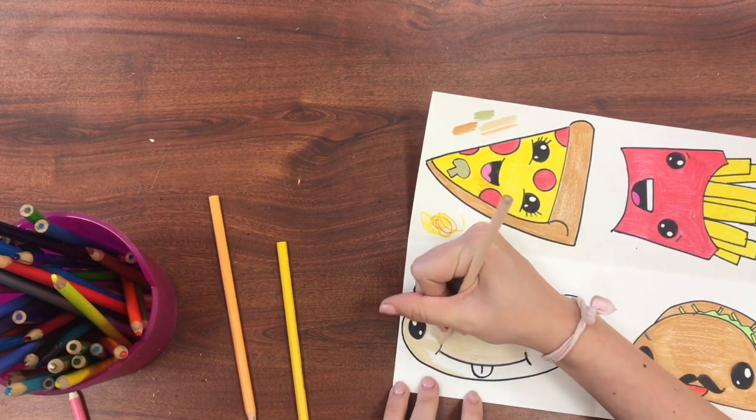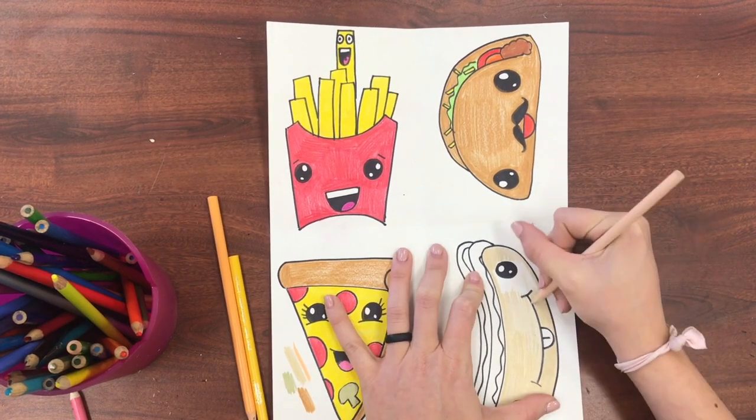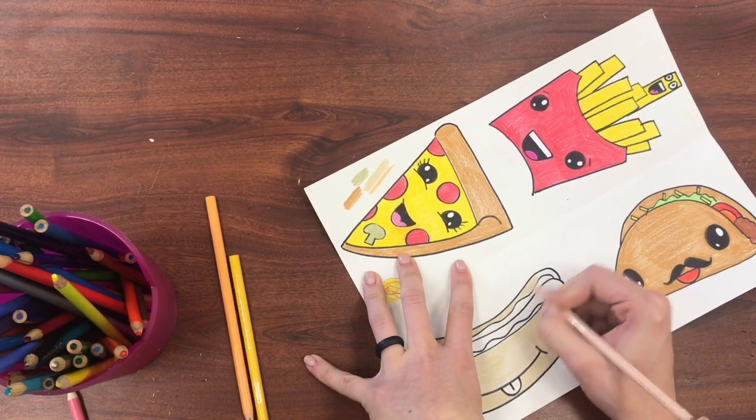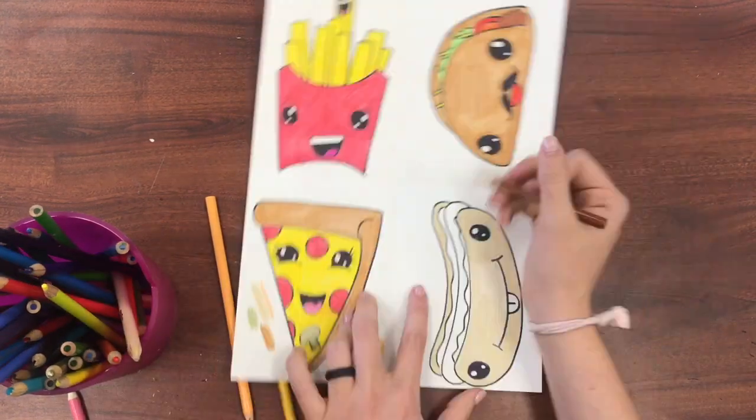You can do that on the side of your paper because we're going to be cutting these out so you won't see that little mark. I'm taking my time pressing firm so that it's nice and bright.